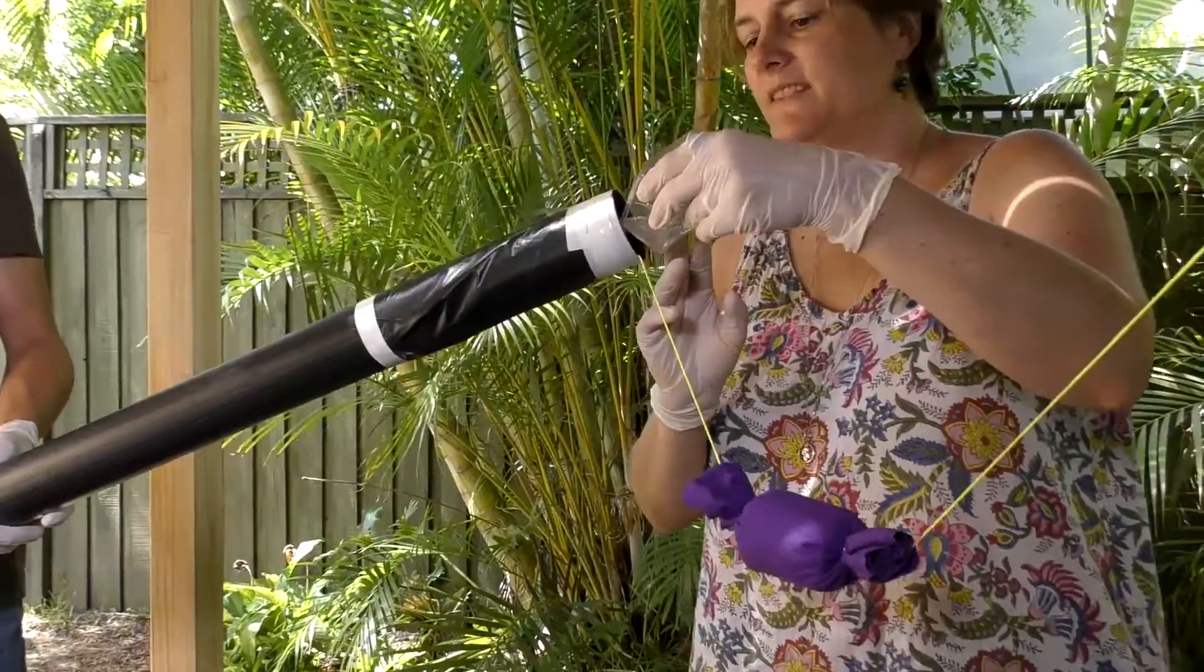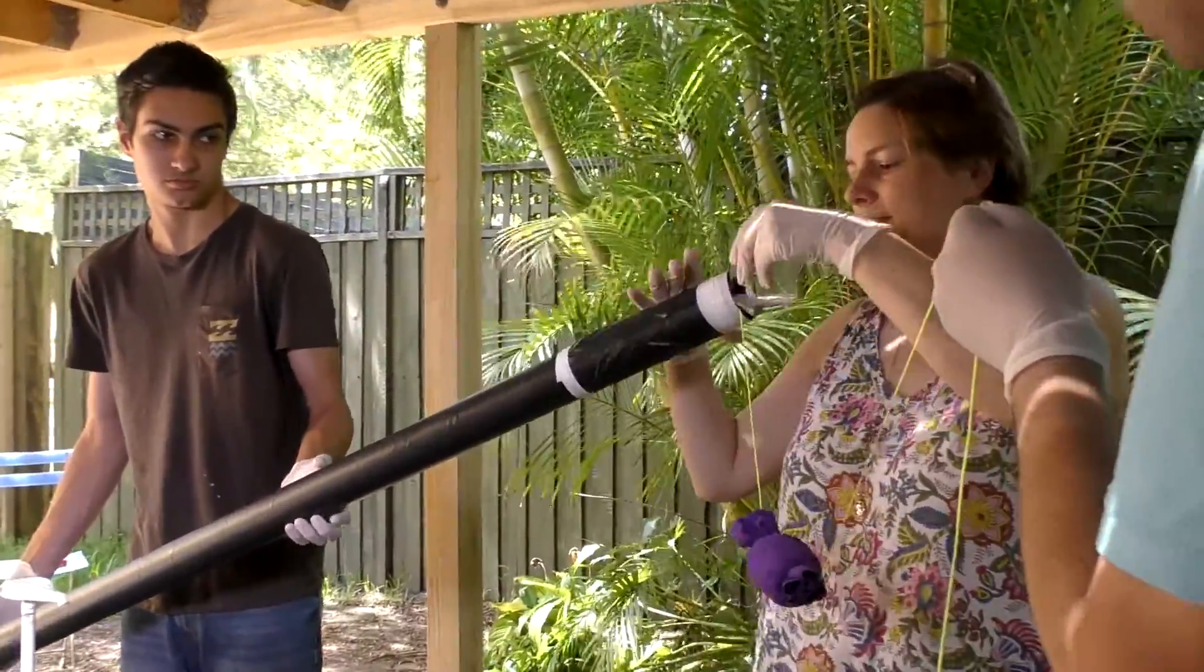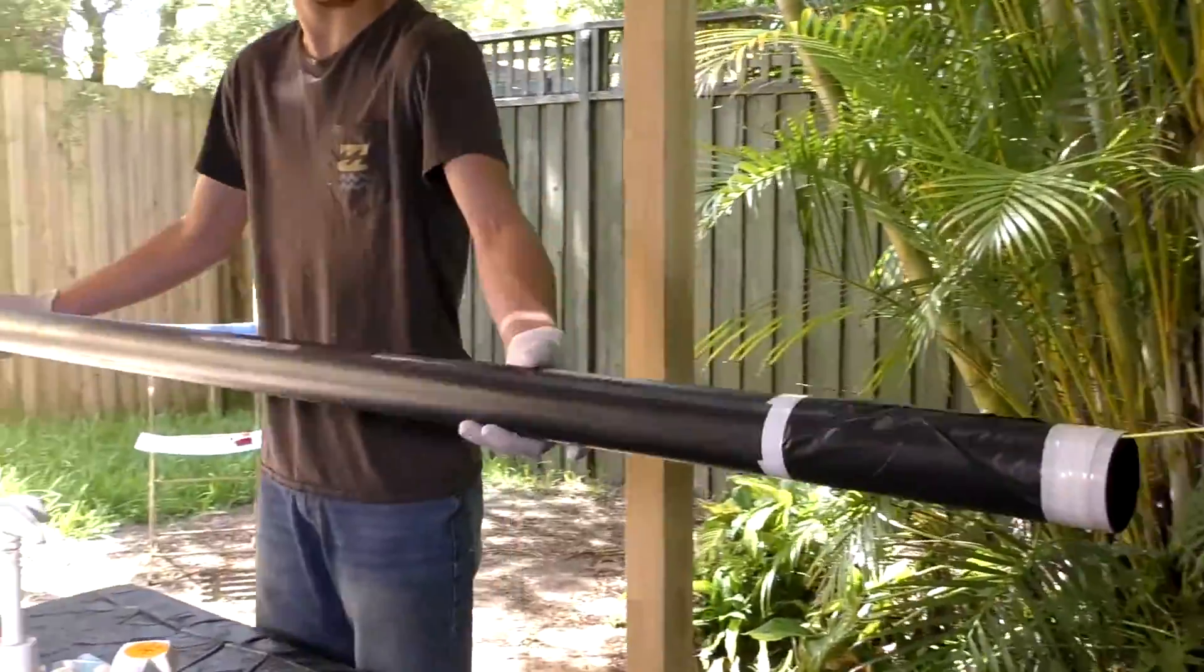Then we pour some epoxy inside the tube and pull the foam back and forth through the tube many times. This coats the inside of the tube thoroughly, filling in all the small pits.